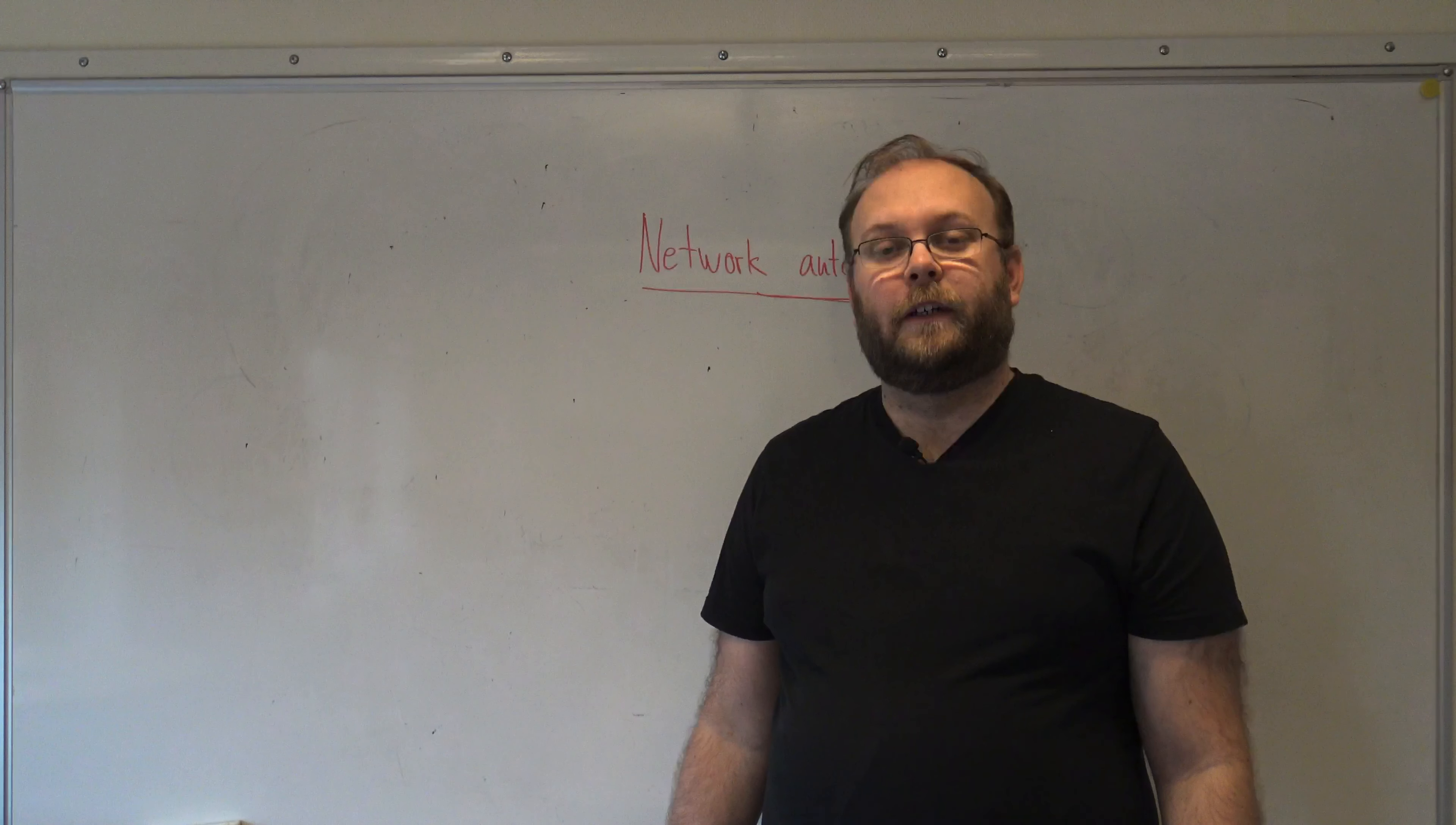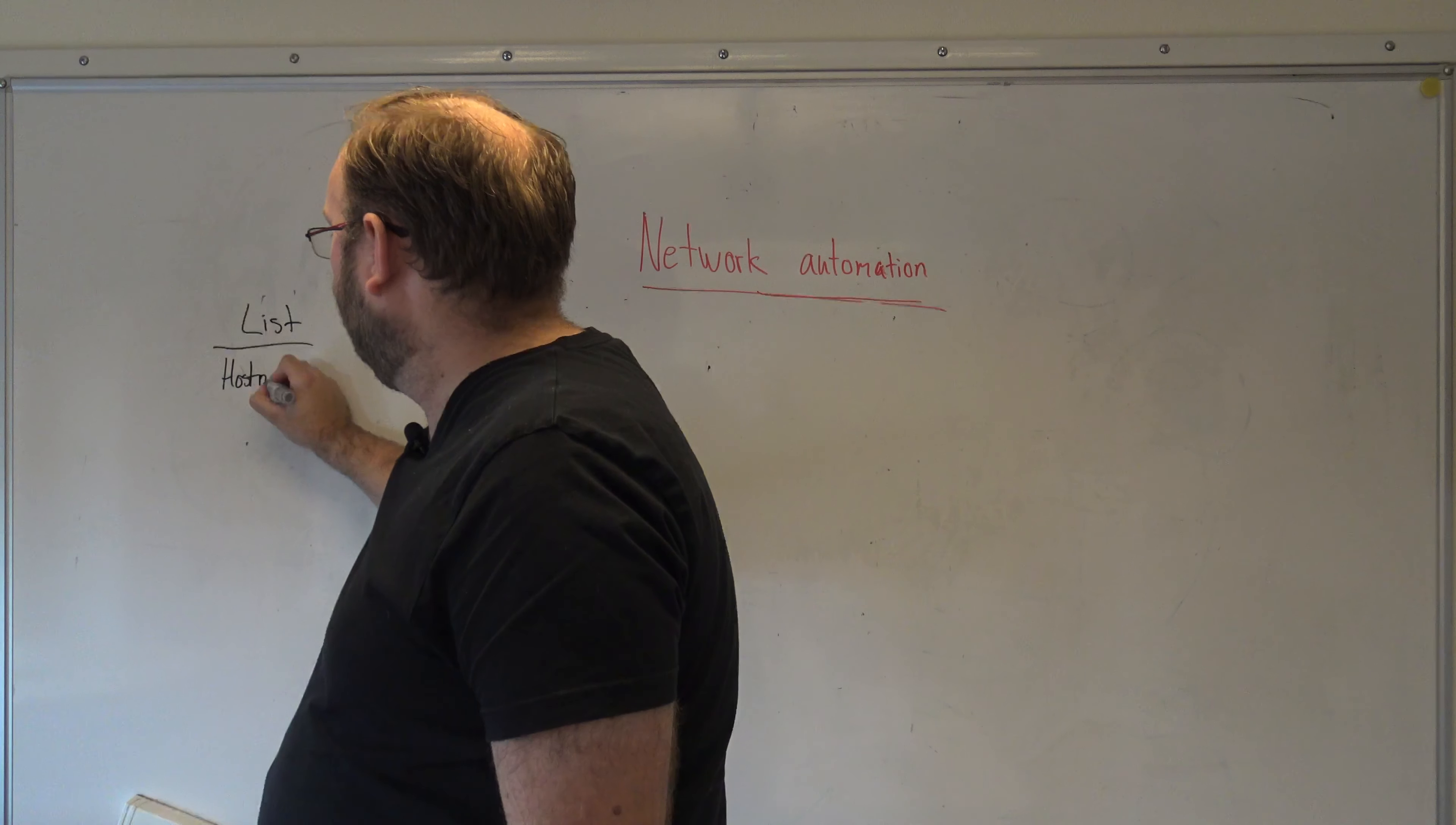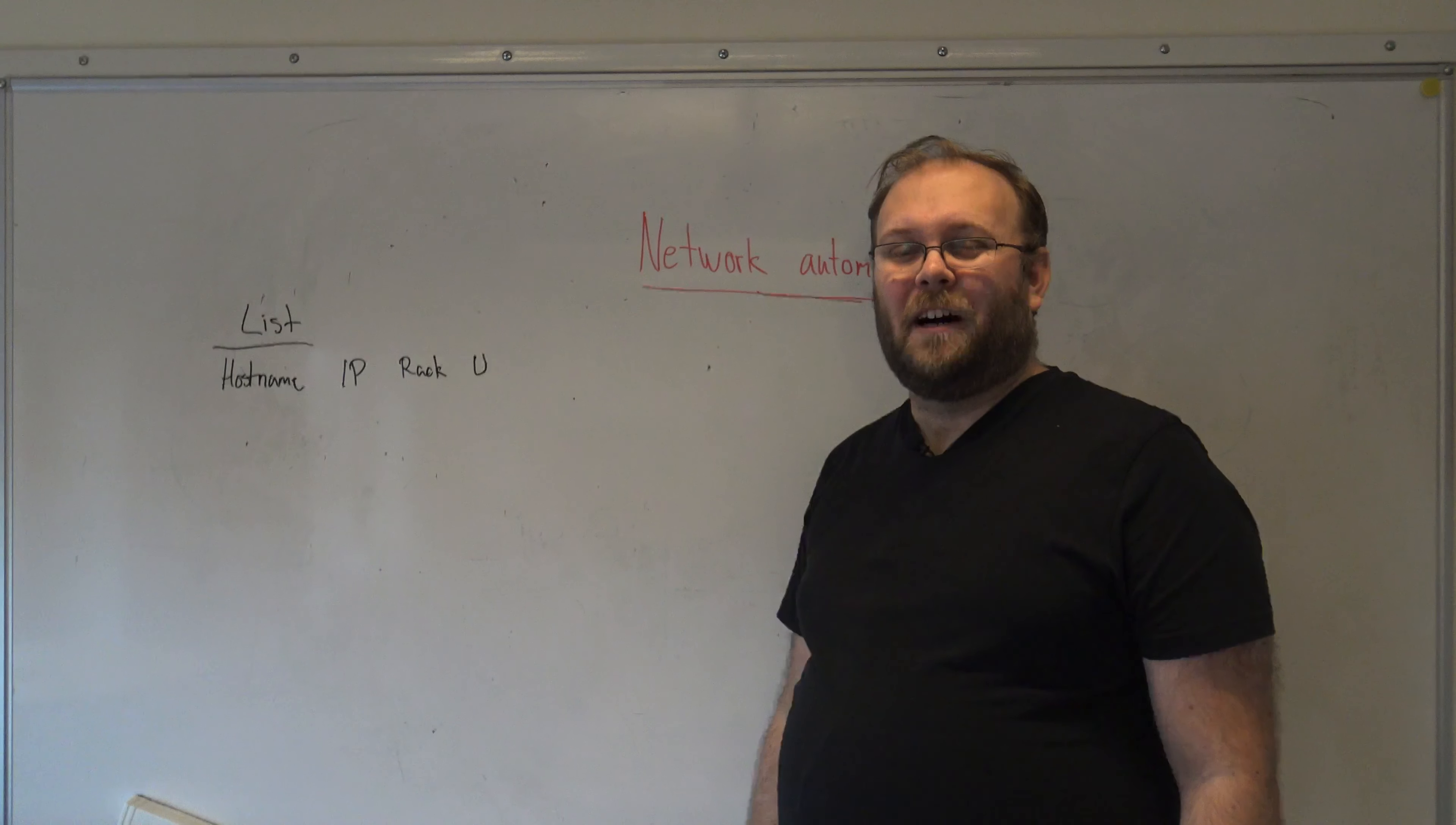So I will be talking about documentation today. When you take over a network, more or less you get a list, maybe an Excel spreadsheet. So you have your list and this includes a couple of fields, maybe it includes hostname and IP, maybe the rack or the location.